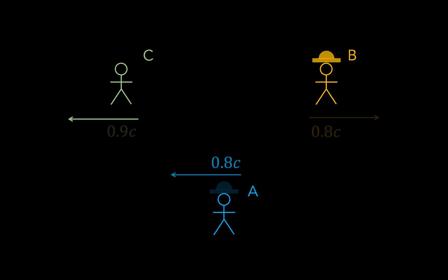So according to Observer B, Observer A is travelling leftward at a speed of 0.8C. But what about Observer C? Well, common sense might tell us that the new speed is 1.7C, since that's 0.9C plus 0.8C. But we know this can't be right, since nothing can travel faster than light.